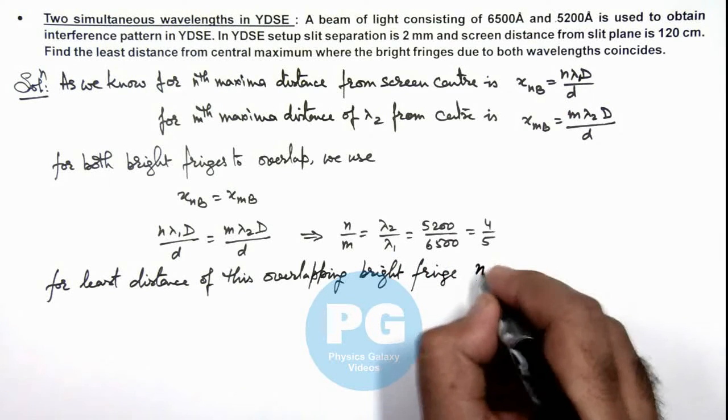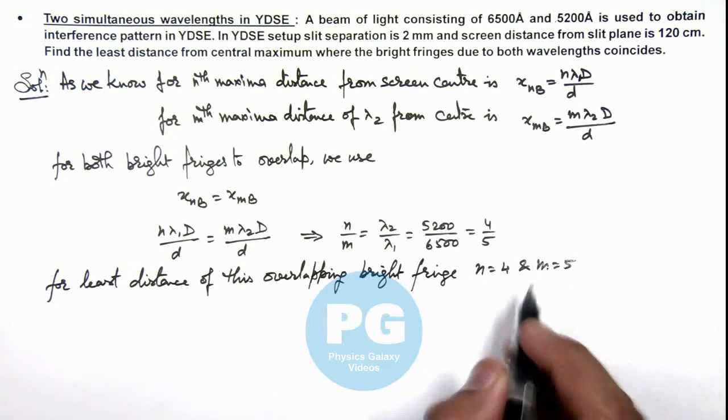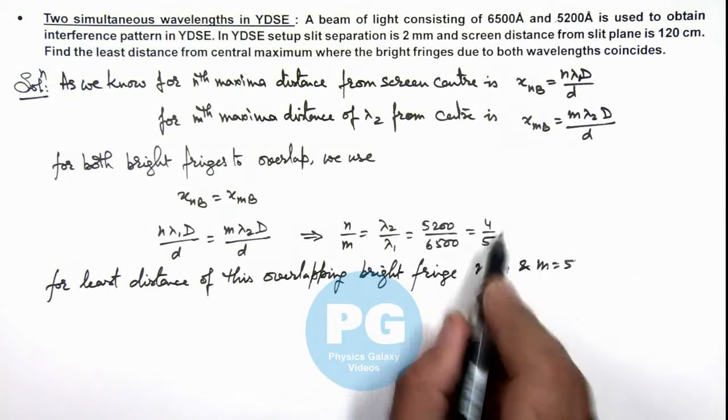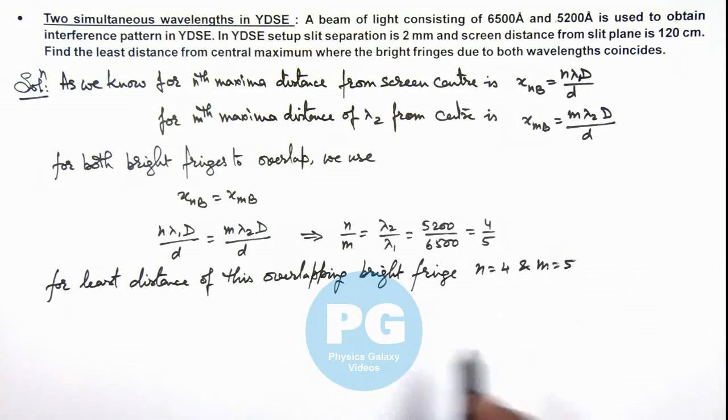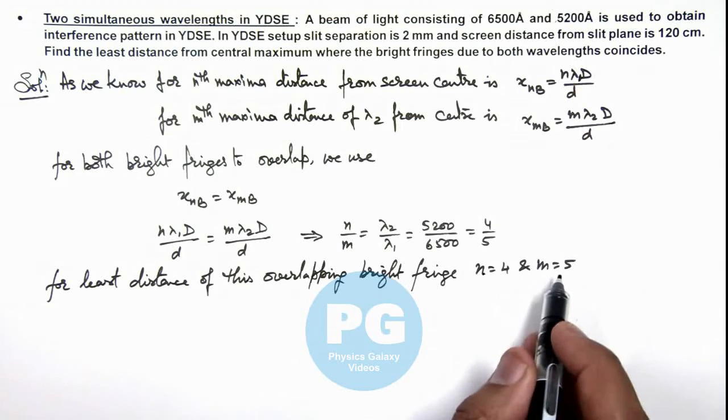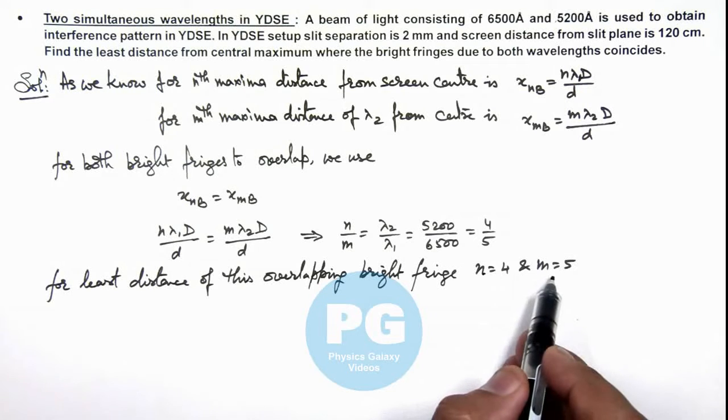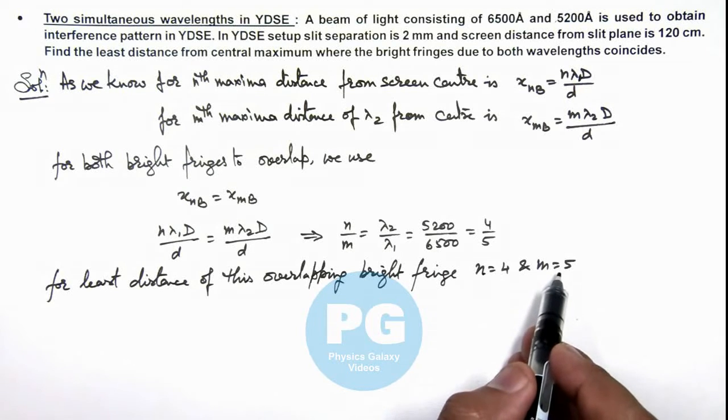Here we can use n should be equal to 4 and m should be equal to 5, that is the closest integer for which this ratio will hold. So for n equal to 4 and m equal to 5, the fourth order bright fringe of lambda 1 coincides with the fifth order bright fringe of lambda 2.